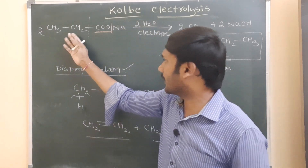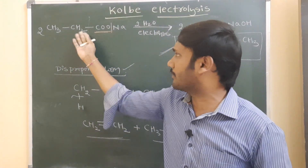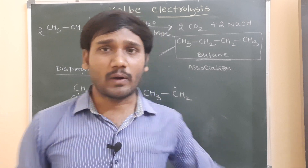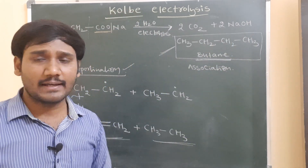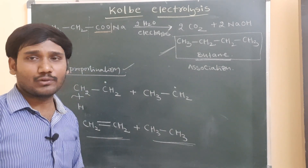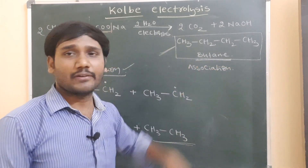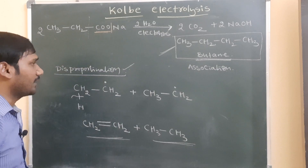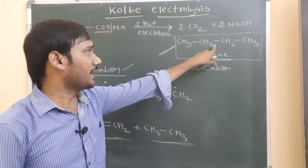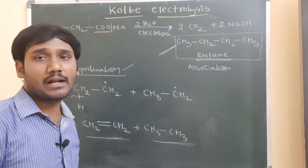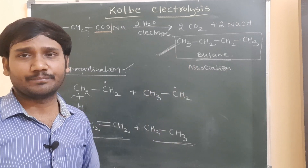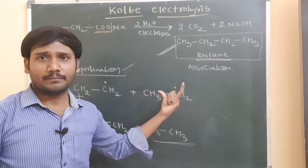When taking sodium or potassium salt of propanoic acid, a mixture of products forms: butane by the association process, and alkene plus ethane by the disproportionation process. Mainly we discuss the preparation of alkanes, so the major priority is the formation of alkane by the association process. This concludes today's session — thank you.